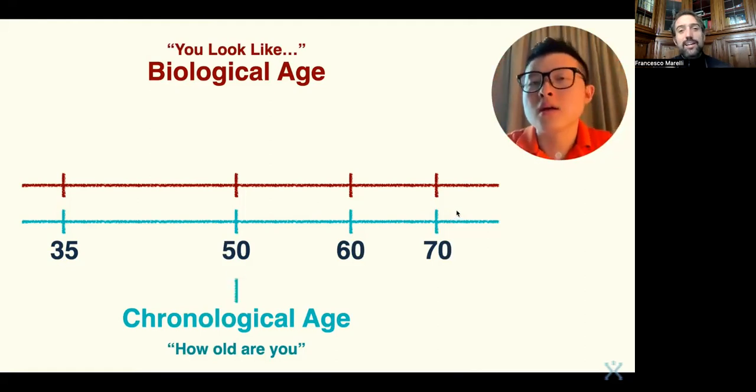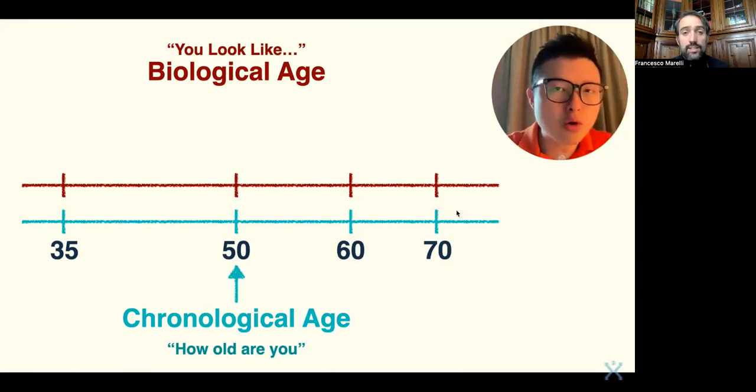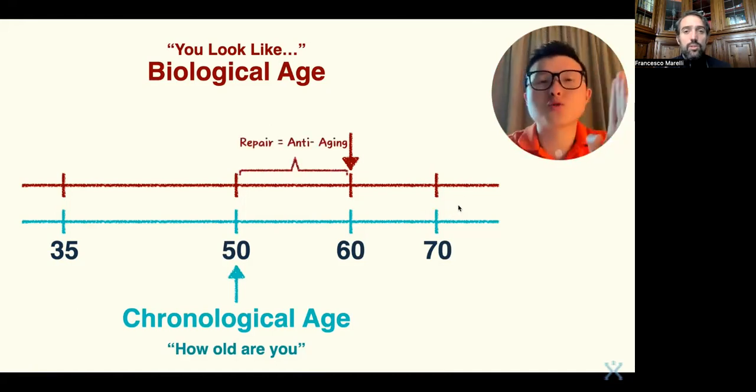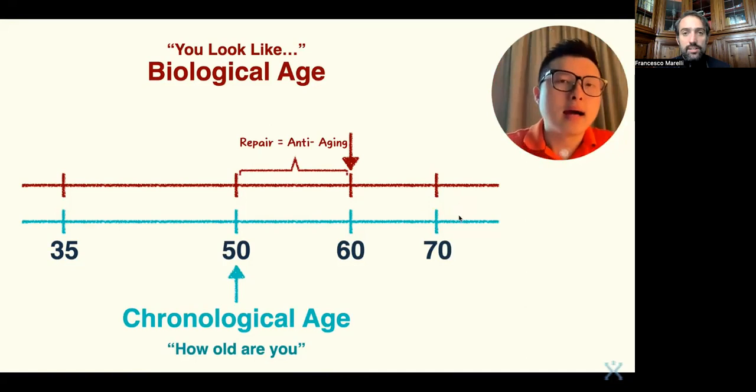The 'look like' means biological age. Do you have friends that are 50 years old, but they look 60 years old? So in order to return from 60 years old back to 50, it is called anti-aging. You need to repair the internal organ function to reflect who you are on the inside.